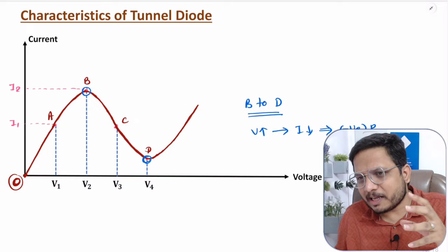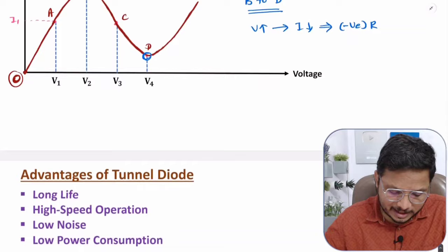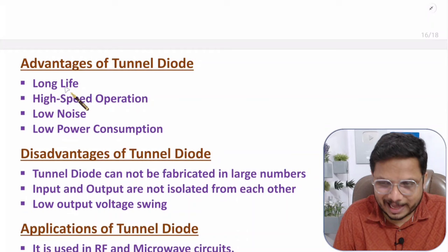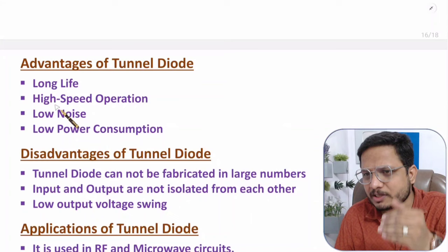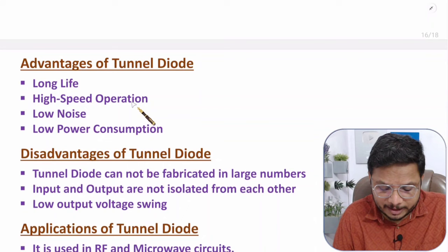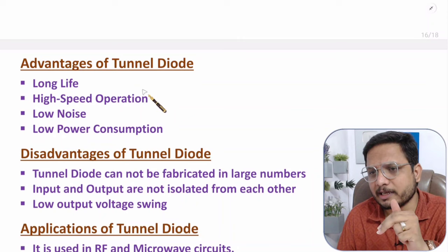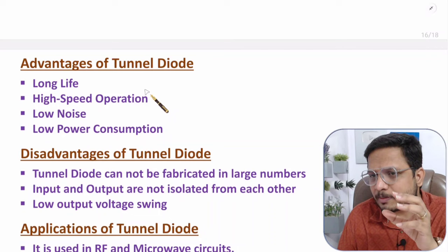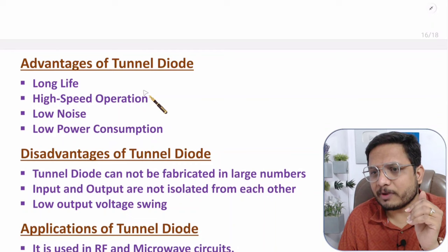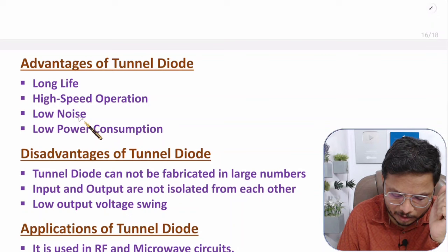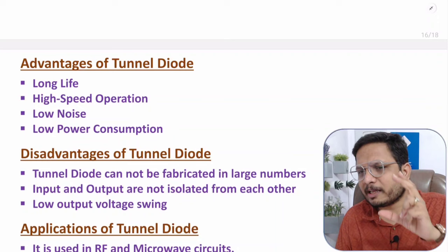Now let us understand the advantages of tunnel diode. First, tunnel diode has a long life because it operates at lower power only. Second, high speed operation — tunnel diode is used in the negative resistance region where reverse recovery time is very less, so switching speed is very fast. Third, it has lower noise and lower power consumption, as we operate tunnel diode at low power.